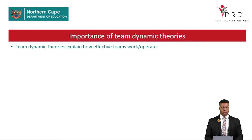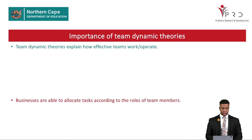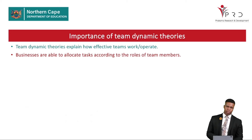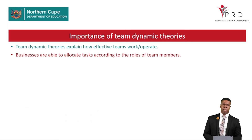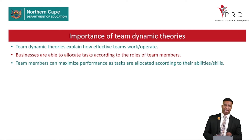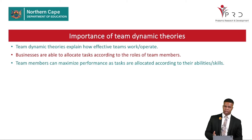Now we look into the importance of team dynamic theories. Team dynamic theories explain how effective teams work or operate. Businesses should be able to allocate tasks according to the roles of team members, meaning a task should be given to a member with the relevant skill or ability. Team members can maximize performance when tasks are allocated according to their abilities — giving a worker a task that matches their skills increases production and benefits the business.